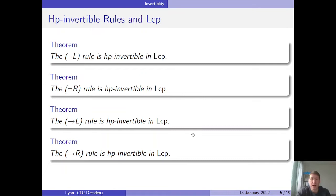In our sequent calculus, all the logical rules are height-preserving invertible — both the negation rules and the implication rules. I'll now explain how we can prove that the negation left rule is height-preserving invertible in our sequent calculus, and go through the proof of that claim.